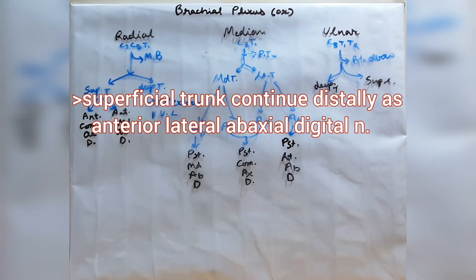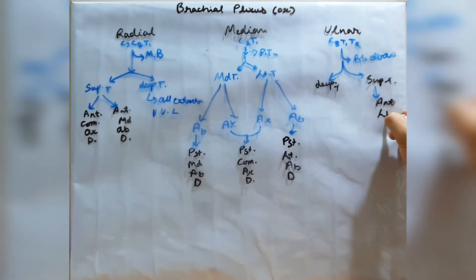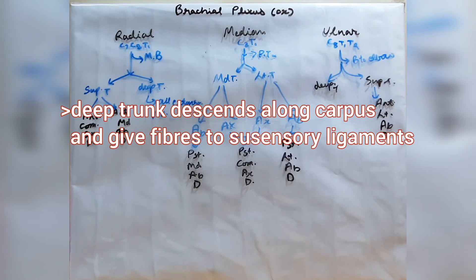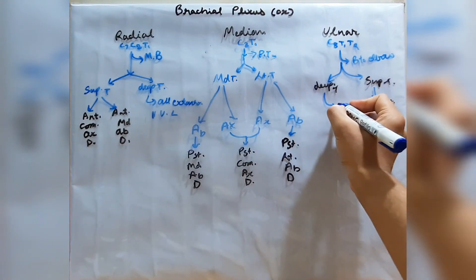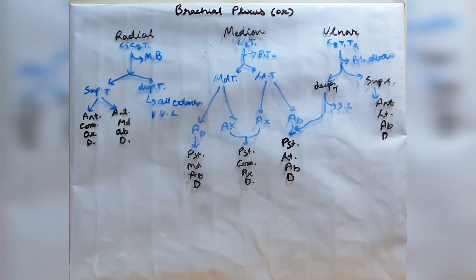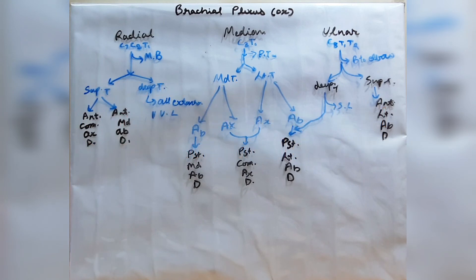The superficial trunk of the ulnar nerve continues forward as the anterior lateral abaxial digital branch. The deep trunk descends along the length of the carpus, gives fibers to the suspensory ligaments, and then joins with the abaxial branch of the lateral trunk of the median nerve to form the posterior lateral abaxial digital branch. In summary, the ulnar nerve supplies the flexor carpi ulnaris, superficial digital flexor, and deep digital flexor muscles.